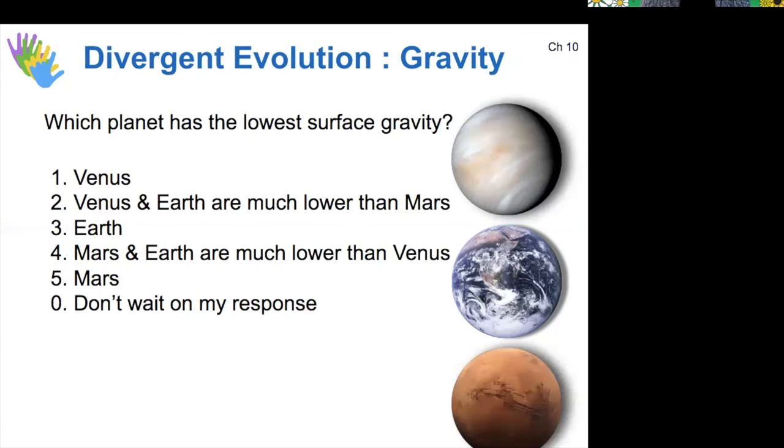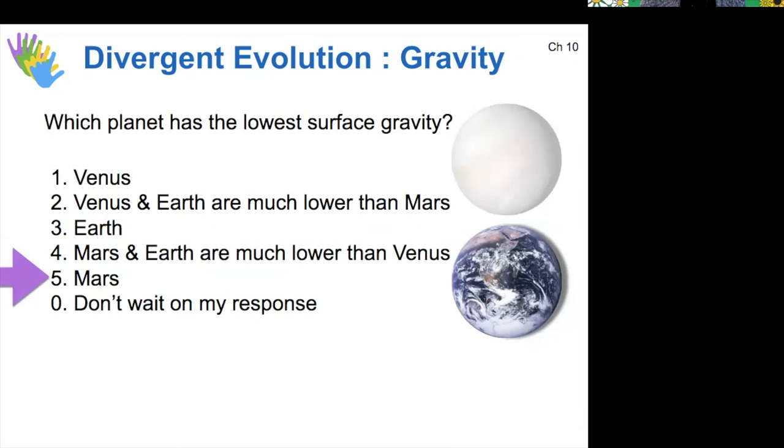Which of these planets has the lowest surface gravity? We'll do this one. All right, so thinking back to the Olympus Mons that we saw earlier being so tall because of the very low surface gravity of Mars. So Mars has the lowest surface gravity. Venus is about 90% of Earth's surface gravity, but Mars only about 38%.